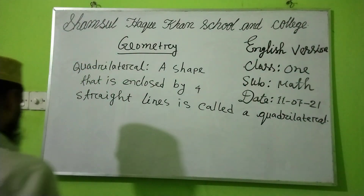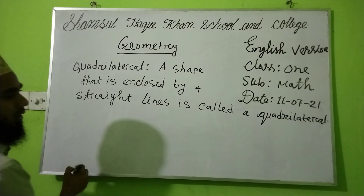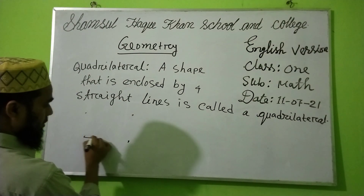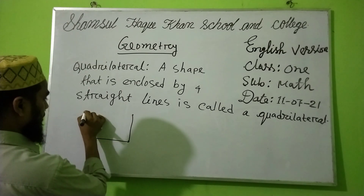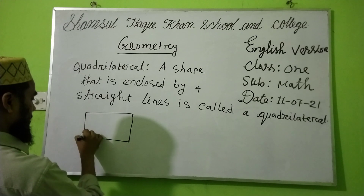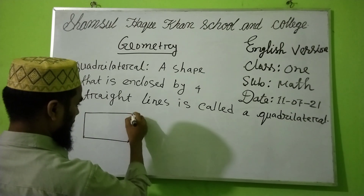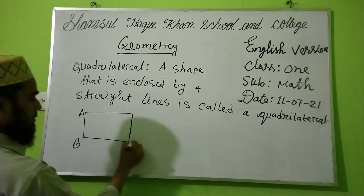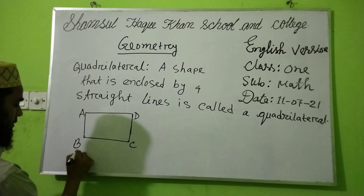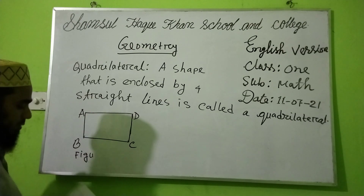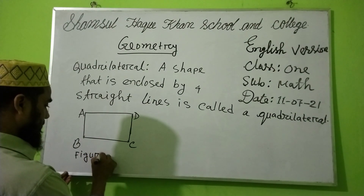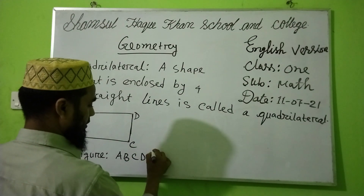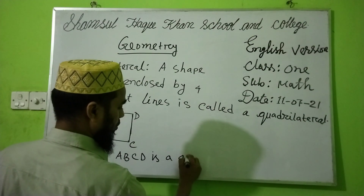A quadrilateral figure has 4 points — A, B, C, and D. Here is the figure: A, B, C, D is a quadrilateral.